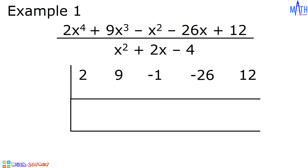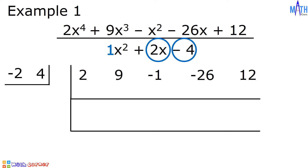For the divisor, the leading coefficient is 1. Since the leading coefficient is 1, let us look at the coefficient of x. The coefficient of x is positive 2. We will write the opposite of positive 2, which is negative 2, on the left side. Next is the constant term. The constant term is negative 4. We will write the opposite of negative 4, which is positive 4, on the left side. And this is the setup.